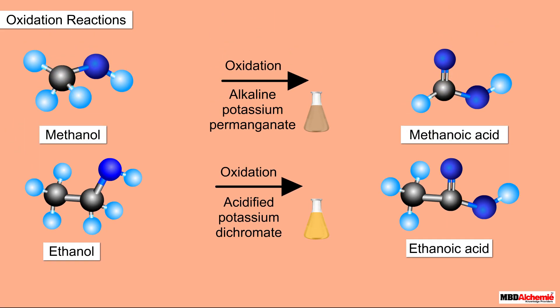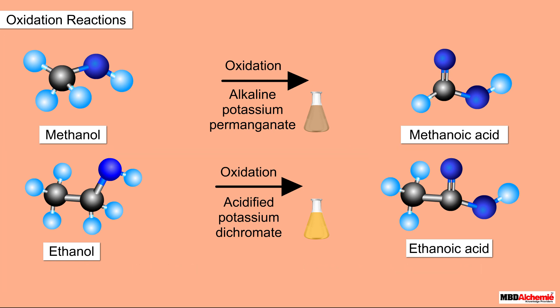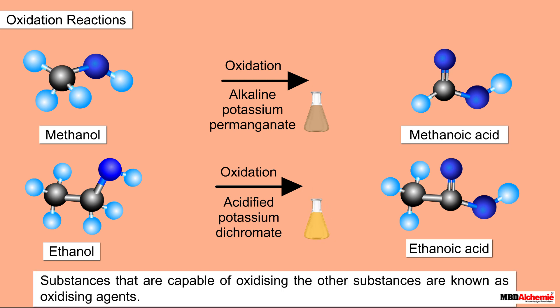So we have seen that carbon compounds like methanol and ethanol undergo oxidation in the presence of other compounds like alkaline potassium permanganate and acidified potassium dichromate. The substances like alkaline potassium permanganate and acidified potassium dichromate that are capable of oxidizing other substances are known as oxidizing agents.